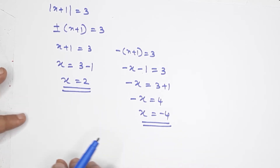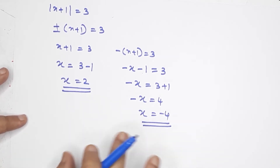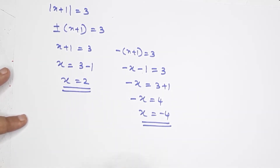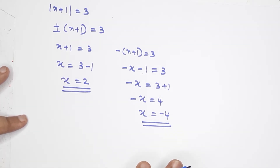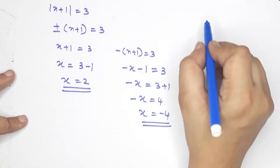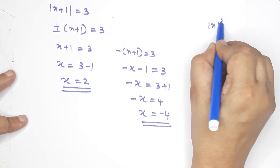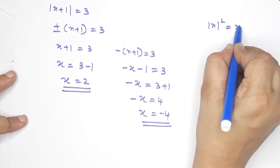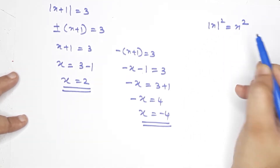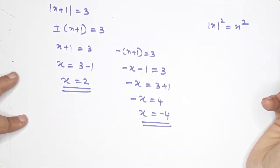This is a very important proof. Let's prove that modulus of x equals the square root of x squared, for any number x. Here is the statement: modulus x equals square root of x squared. Let's prove it.